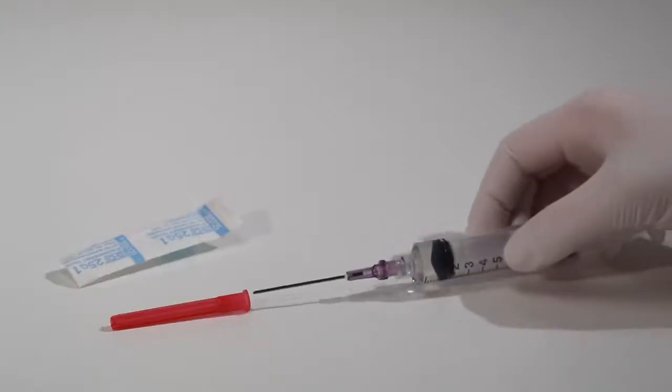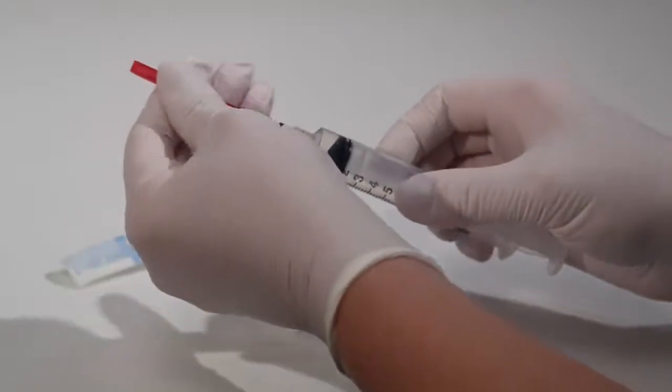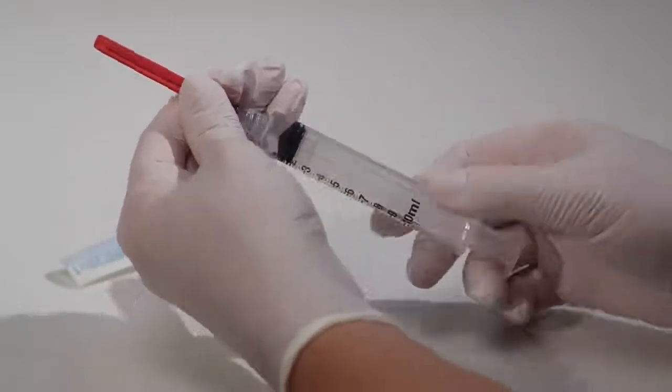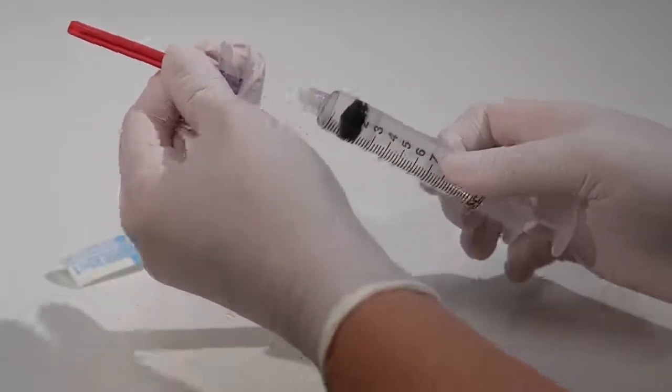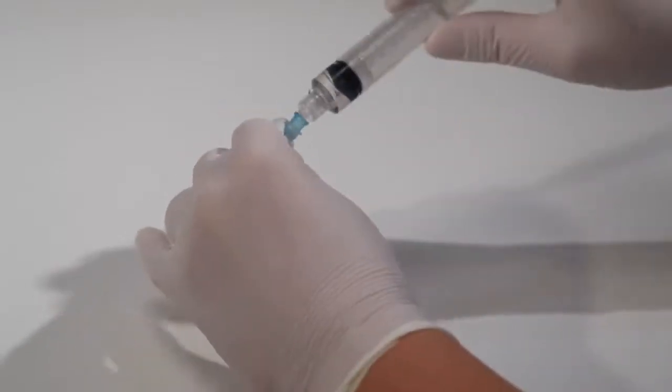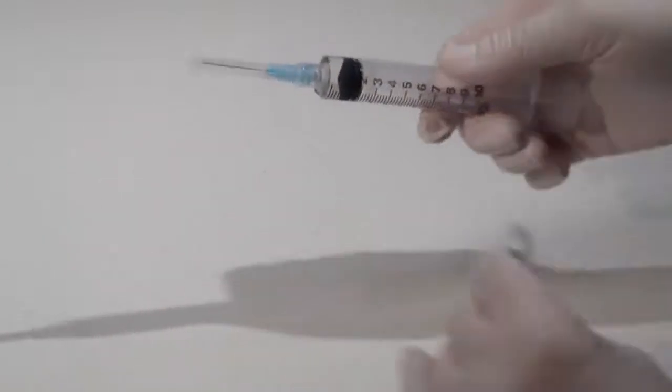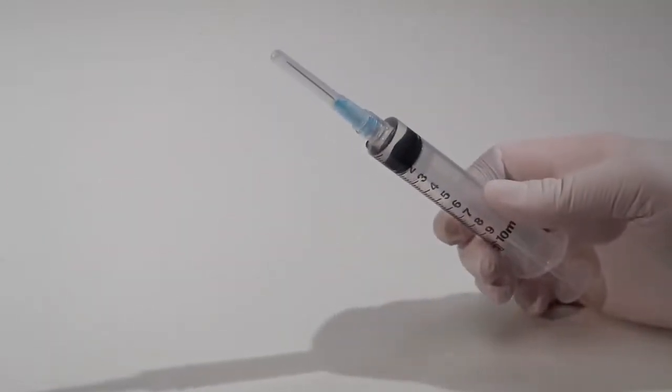Passively recap the blunt filter needle. Then, remove it from the syringe and dispose of it properly in an approved sharps collector. If performing a skin injection, attach the appropriate safety-engineered hypodermic needle, such as the BD Eclipse needle, or administer the medication directly through a vascular access device.